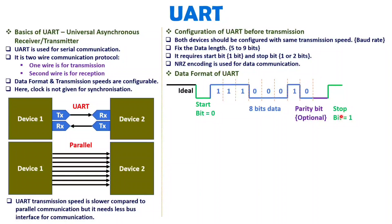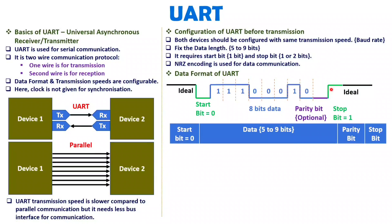After the parity bit, we send a stop bit. The stop bit may be 1 bit or 2 bits — that is up to the programmer. After the stop bit, which is logic 1, the line returns to idle. So the UART data format consists of: one start bit, followed by the data length (which can vary from 5 to 9 bits), then an optional parity bit, and finally the stop bit.